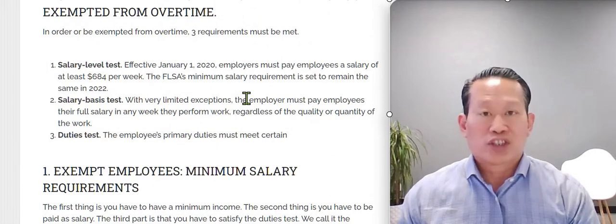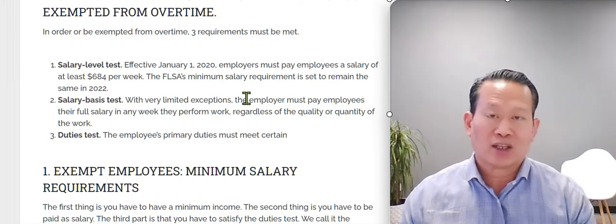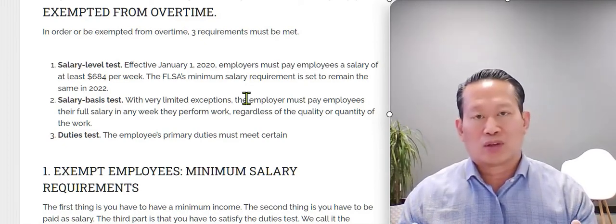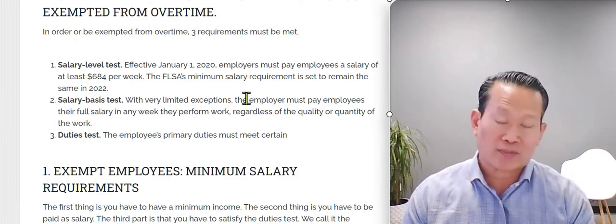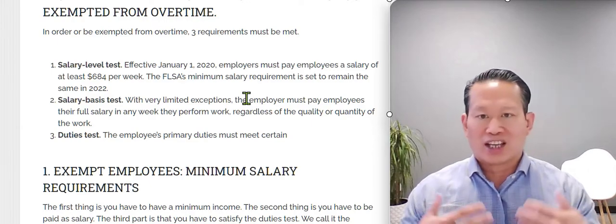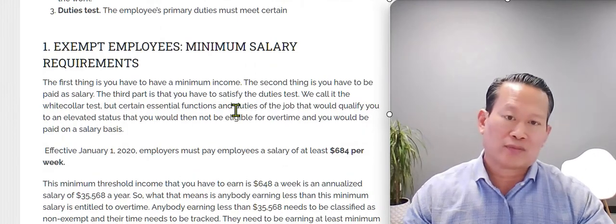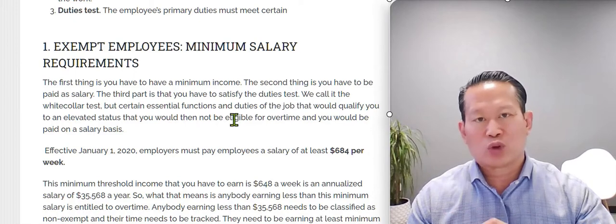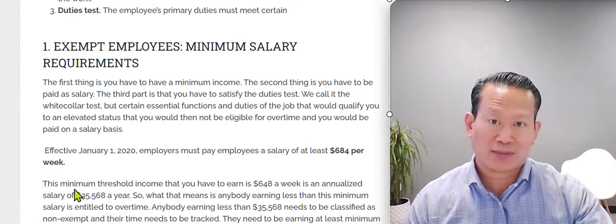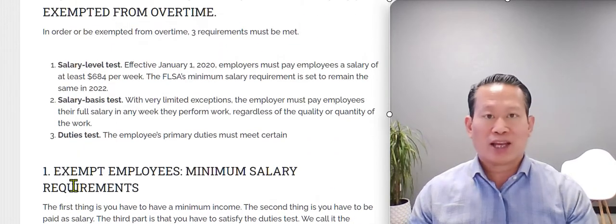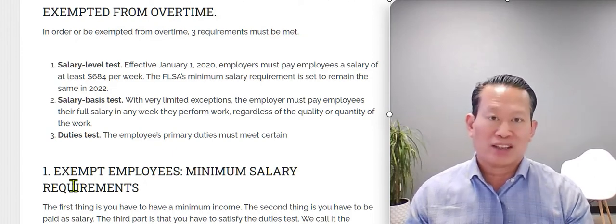The first category is the salary level. Starting on January 1st, 2020, any employee that is exempt from the Fair Labor Standards Act has to be paid a salary of at least $684 per week. If you're paying someone $684 per week, their annual salary is $35,500. That's the first requirement — you have to pay them at least $684 per week in order to meet the exemption category.